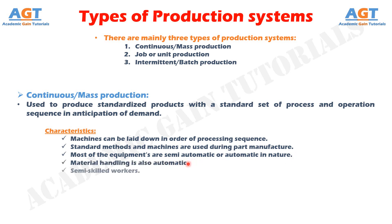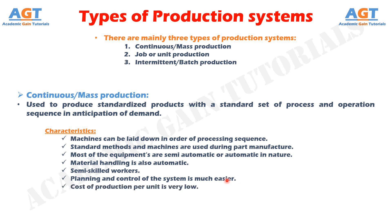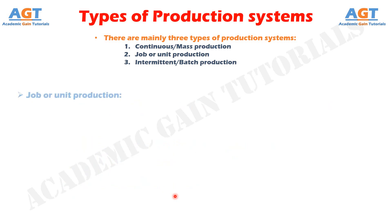Semi-skilled workers are normally employed as most of the facilities are automatic. As product flows along a predefined line, planning and control of the system is much easier. Cost of production per unit is very low owing to the high rate of production. In-process inventories are low as production scheduling is simple and can be implemented with ease.